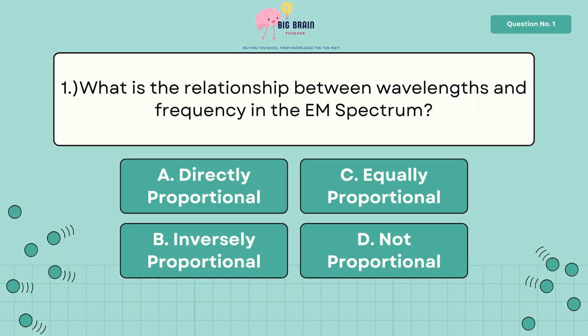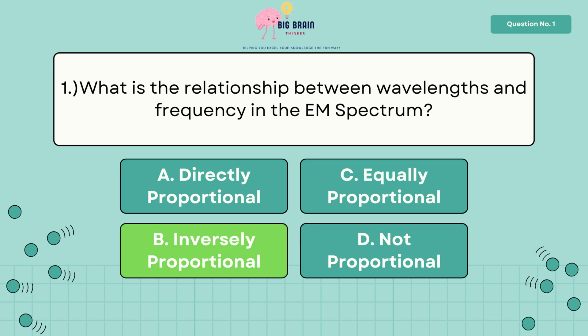What is the relationship between wavelengths and frequency in the EM spectrum? The answer is letter B, inversely proportional.